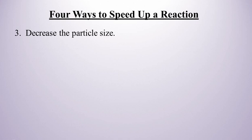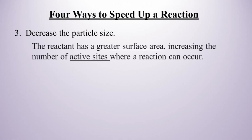So concentration. The third way to speed up a reaction is to decrease the particle size. And so if you have a big chunk of something, it's going to react much more slowly than if you grind that up into something that's much smaller. And that's because the reactants have a greater surface area. And so in chemistry, we say that increases the number of active sites or spots where the actual chemical reaction can take place.